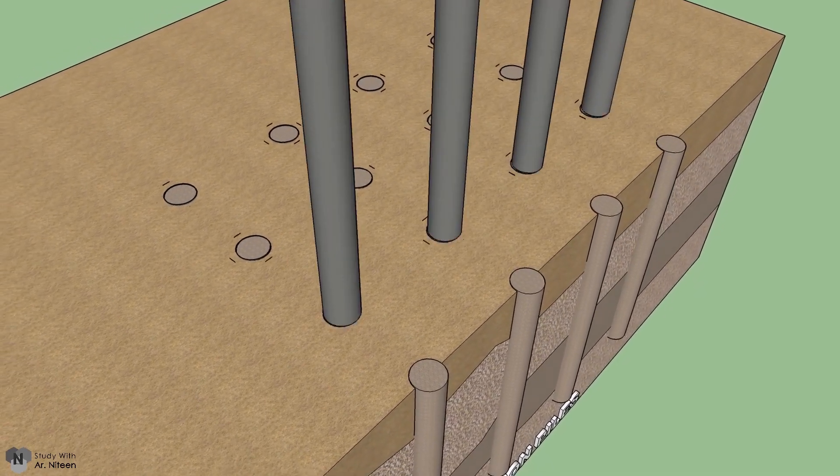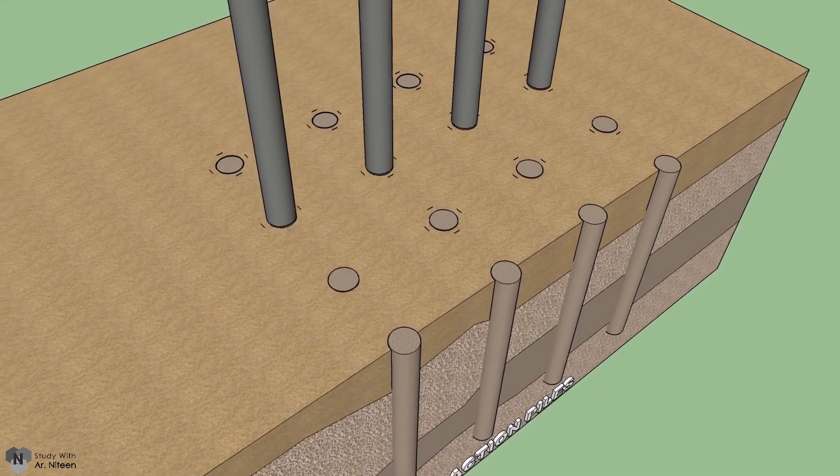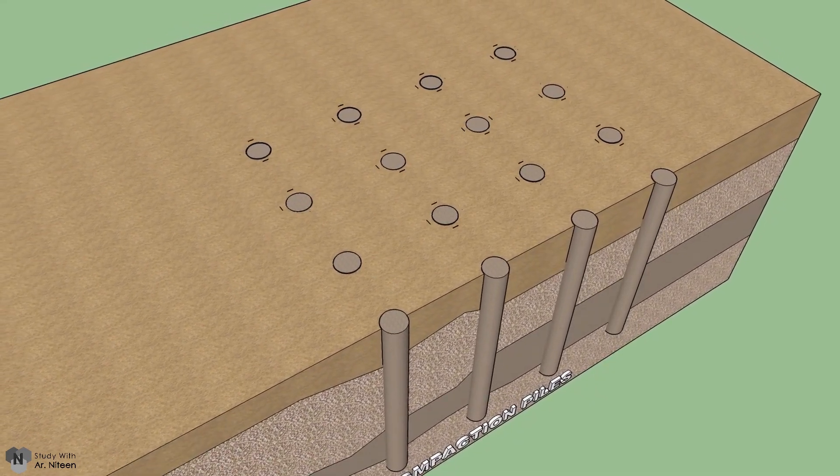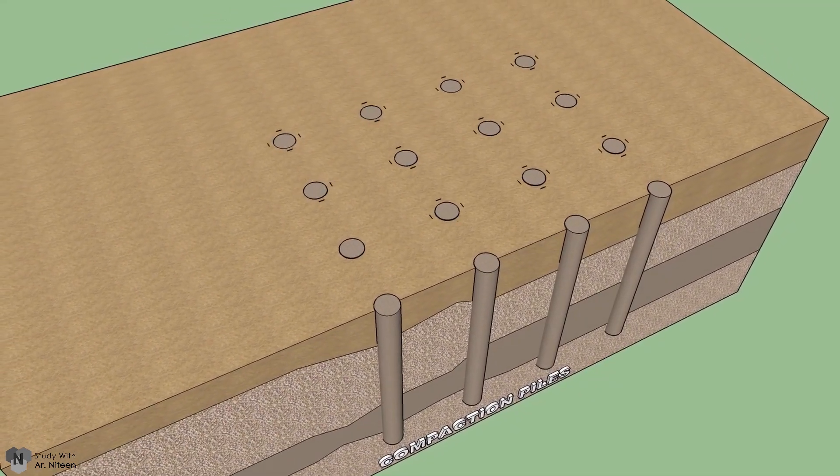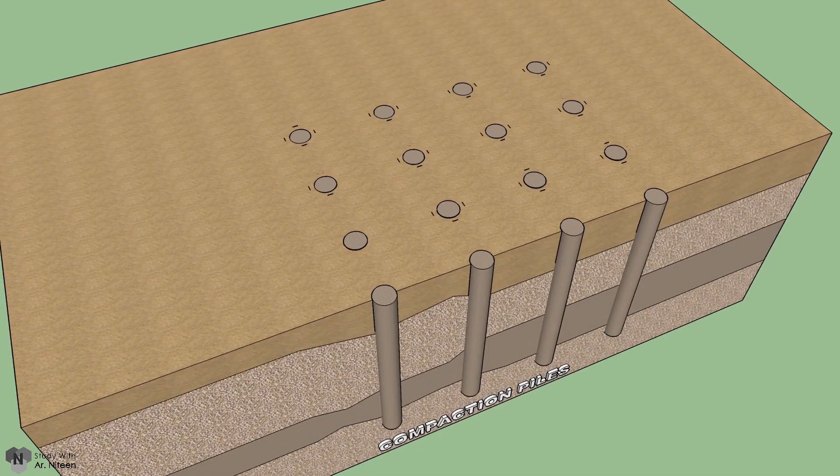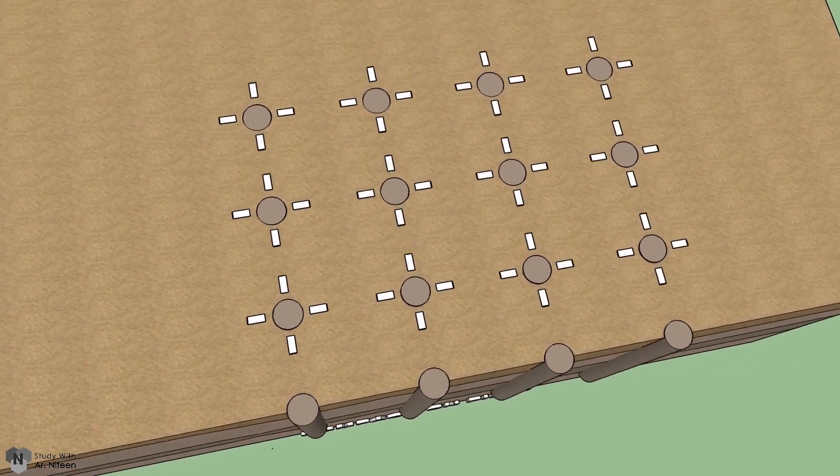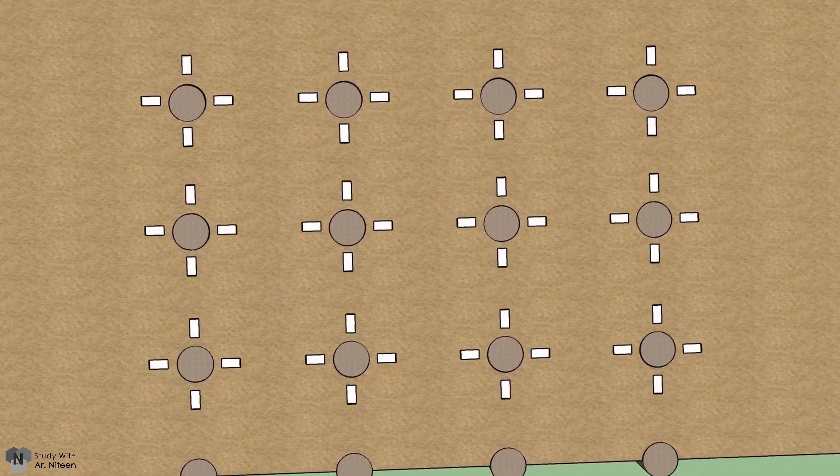Granular soil properties are improved by the compacting process through physical displacement of the particles, which decreases the void ratio and increases the relative density and bearing capacity of the soil.